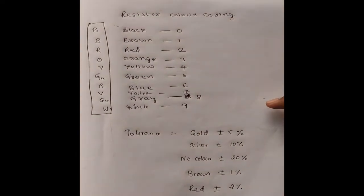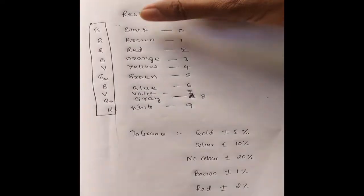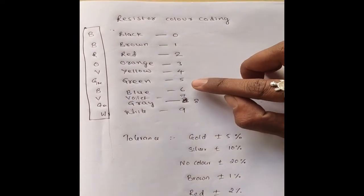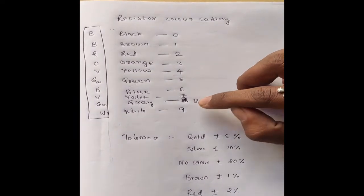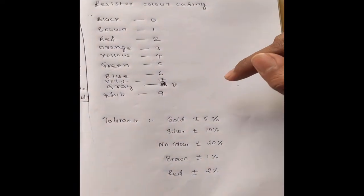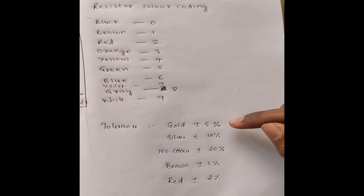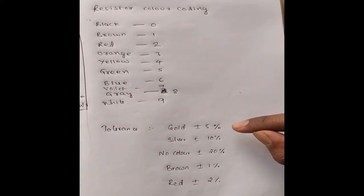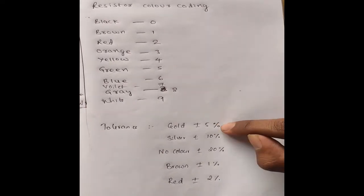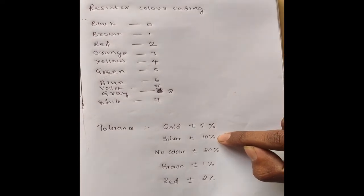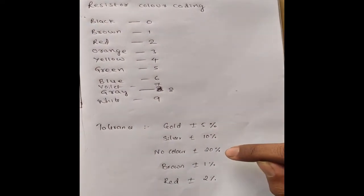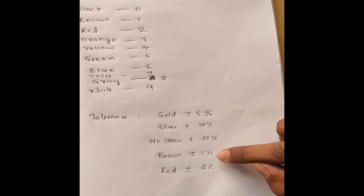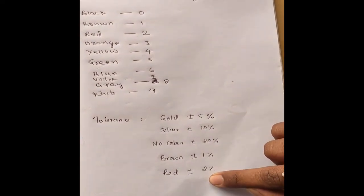Each color represents a value: black is 0, brown is 1, red is 2, orange is 3, yellow is 4, green is 5, blue is 6, violet is 7, gray is 8, and white is 9. There is also a tolerance value — gold is ±5%, silver is ±10%, no color is ±20%, brown is ±1%, and red is ±2%.